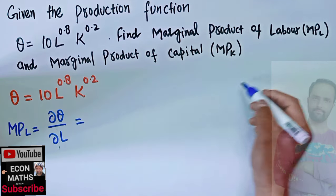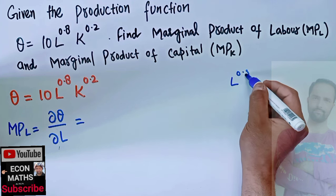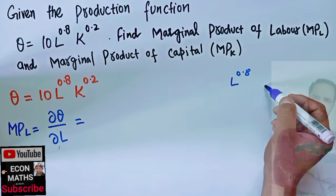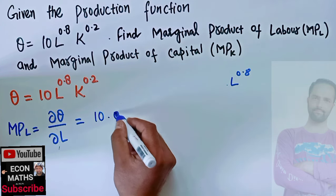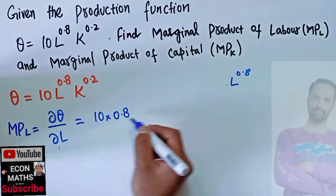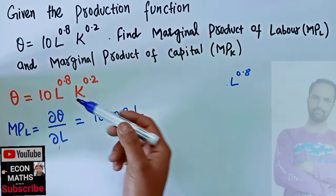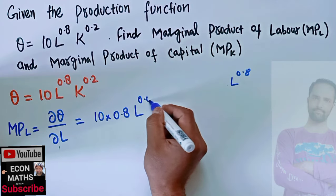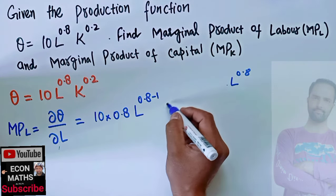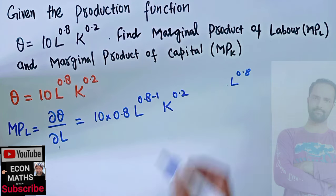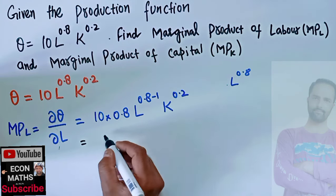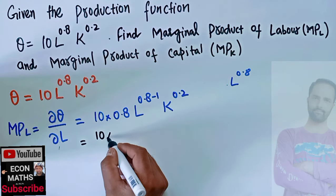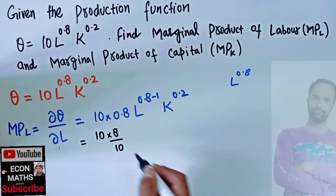Taking the partial derivative with respect to L: the exponent of L^0.8 becomes the coefficient by the power function rule, giving us 10 × 0.8 × L^(0.8−1). K^0.2 remains the same since we are differentiating with respect to labor. This can be written as 10 × (8/10).